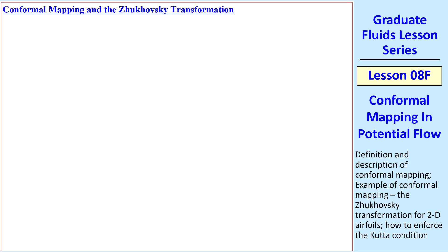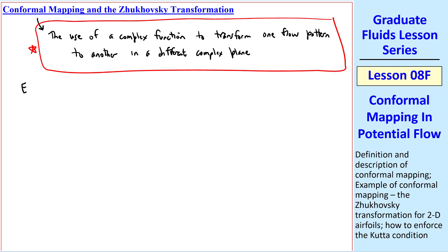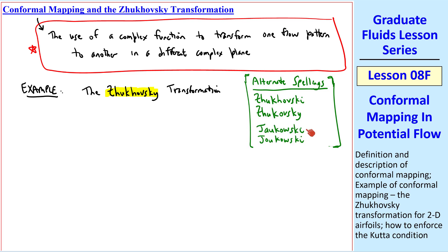Now let's introduce conformal mapping. Conformal mapping can be defined as the use of a complex function to transform one flow pattern to another in a different complex plane. This is best illustrated by an example. In fact, the only transformation I'll mention is the Joukowsky transformation. I collected all the alternate spellings of this Russian name Joukowsky. Some people spell it with an I on the end. Some people leave out this H, while others make a more phonetic spelling, Joukowsky. From what I've read, this is the proper way to spell his name.